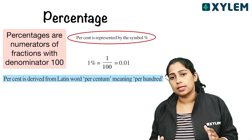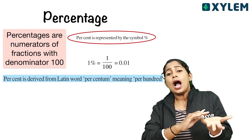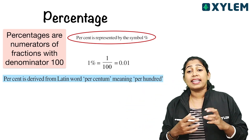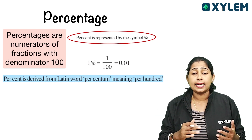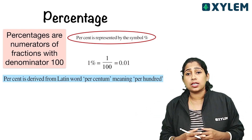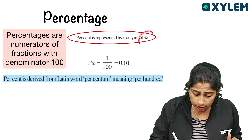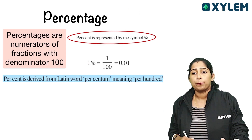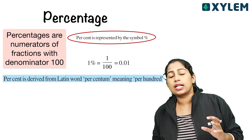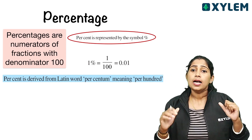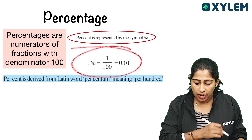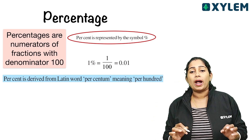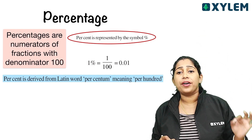This is what percentage represents. How do we represent this? Where do we write 2 percentage, or 3 percentage, or 10 percentage? There is a symbol for it. The percentage symbol is this — represented as out of 100. 1 percentage is 1 by 100.